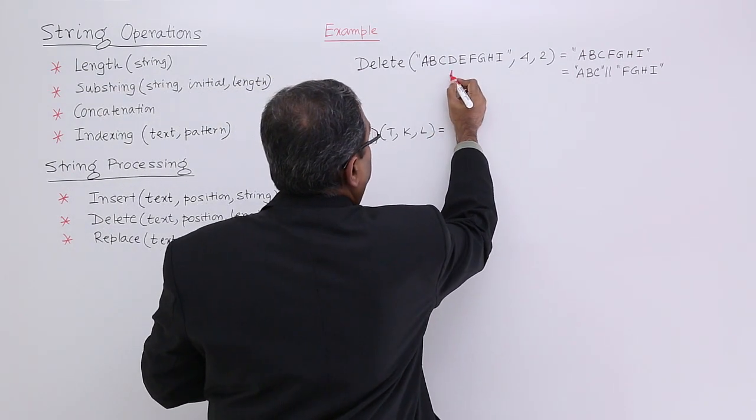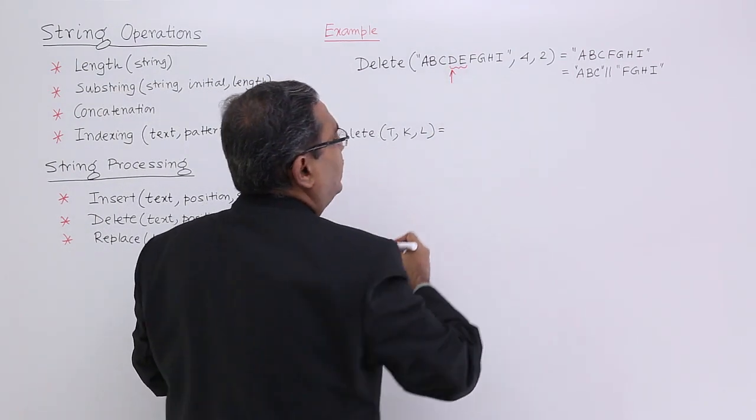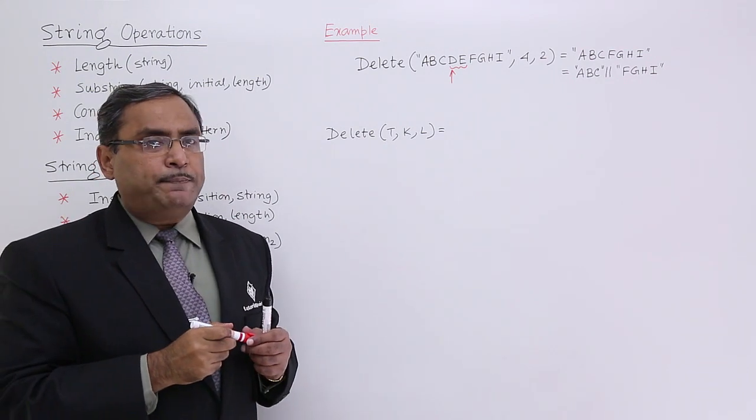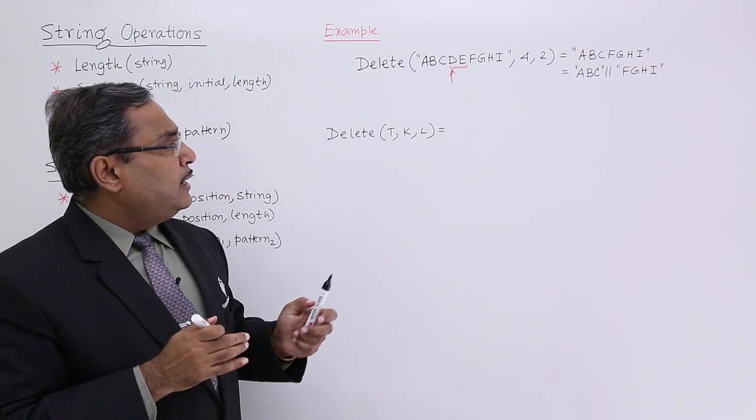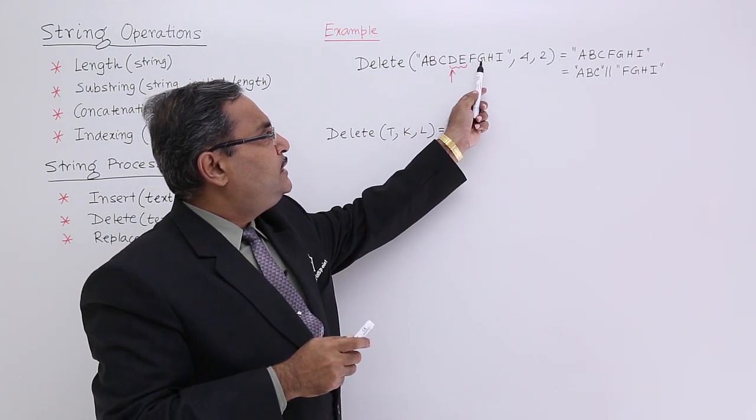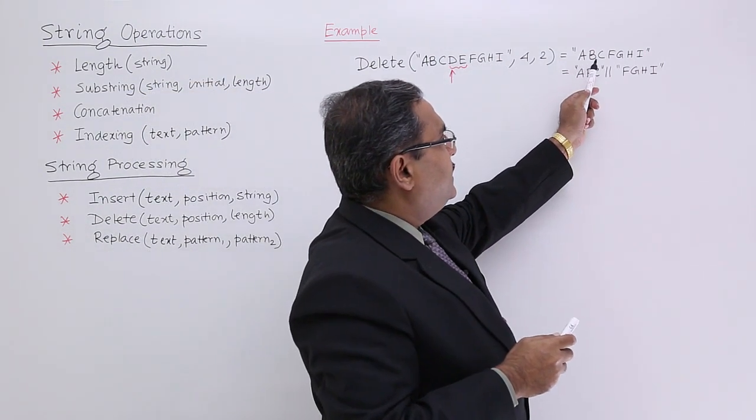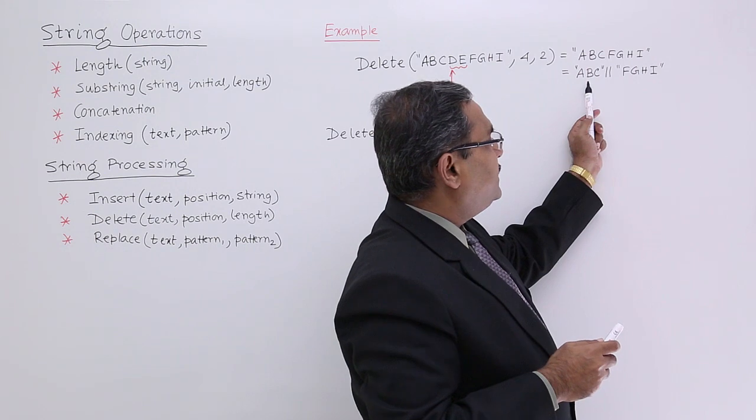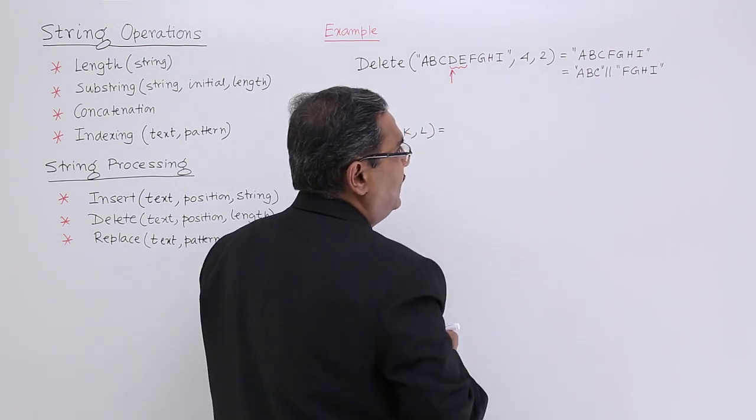From the fourth place, it is supposed to delete two characters. That is the purpose of the delete. What will happen? I shall remain with A, B, C and then F, G, H, I. That means ABC concatenation FGHI.